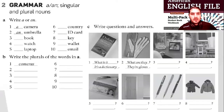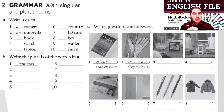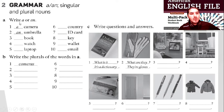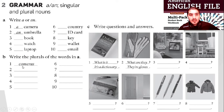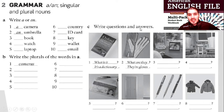Next one — Grammar: 'a' or 'an'. Singular means one, plural means two, three, four, five. Write 'a' or 'an'. Then write the plurals of the words. For example, 'a camera' — what is the plural? Cameras. A camera, two cameras. Very well.